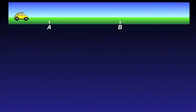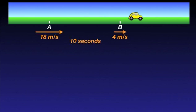And it just happens that, in most cases, when an object slows down, we take the direction of motion as our positive direction. Let's have a look at this quick example. The speed of the car at A is 18 meters per second and at B is 4 meters per second. Just to keep it simple, let's say that it takes 10 seconds for the car to move between A and B.